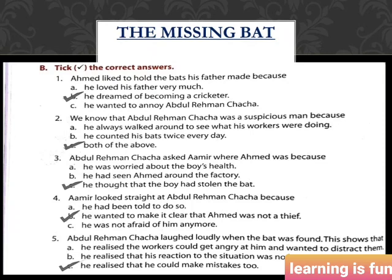The fourth one: Amir looked straight at Abdulrahman's cha-cha because option B is correct — he wanted to make it clear that Ahmad was not a thief. The fifth one says: Abdulrahman's cha-cha laughed loudly when the bat was found. The correct answer is option C — he realized that he could make mistakes too.